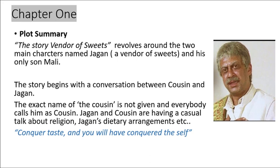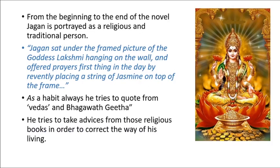'Conquer taste and you will have conquered the self' means once you know how to conquer or absorb the taste, you can have self-control. If you can control your tongue, you can control your body or the self. From the beginning to the end of the novel, Jagan is portrayed as a religious and traditional person. For example: 'Jagan sat under the framed picture of Goddess Lakshmi hanging on the wall and offered prayers first thing in the day.' As a habit, he always takes guidance from the Vedas and the Bhagavad Gita to correct the way of his living.